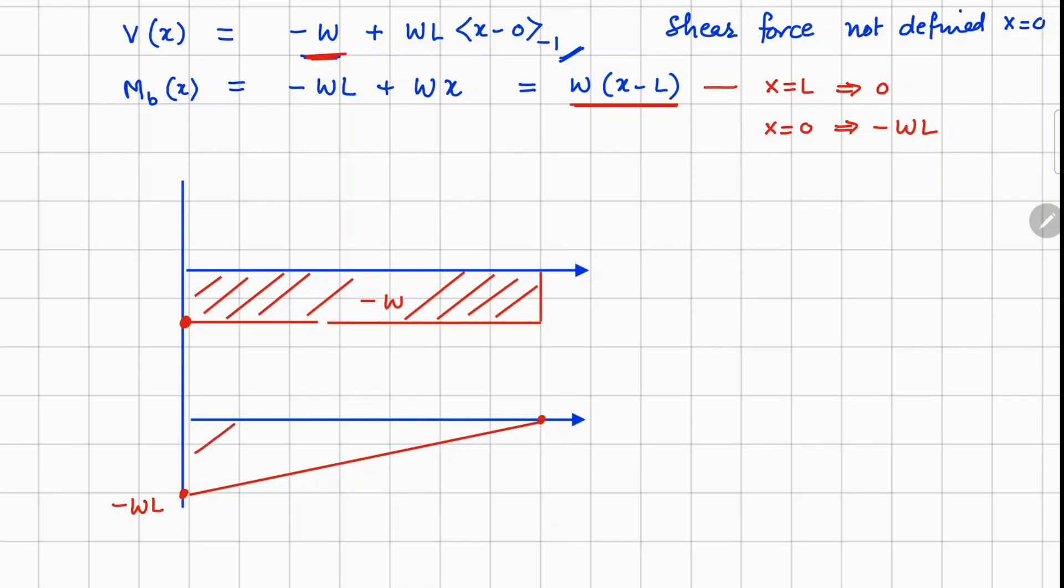So this is how your bending moment looks. This is your V(x), and this one is your M_b(x). The convention that we have followed is plus in this manner for shear force and in this manner for your bending moment.